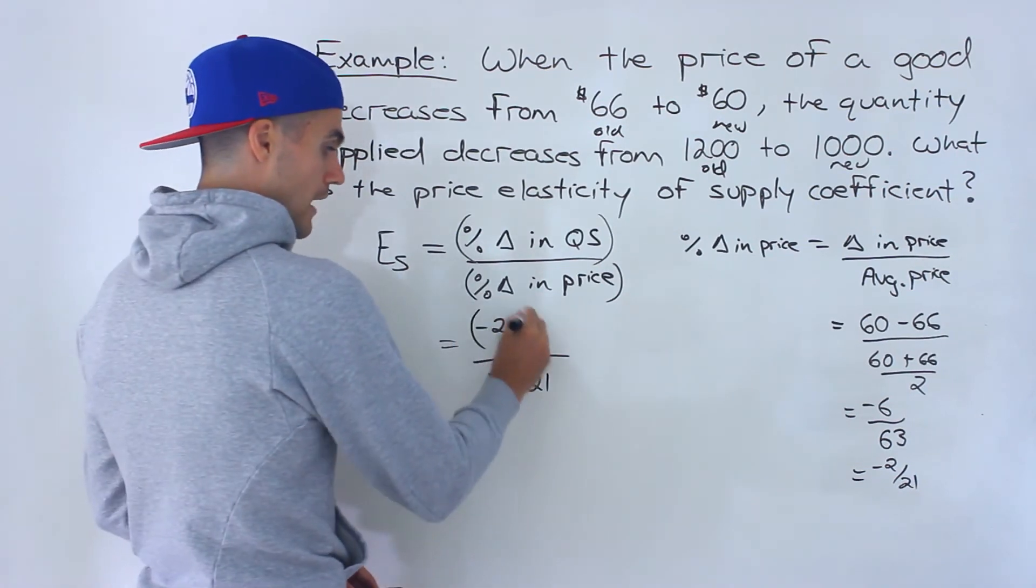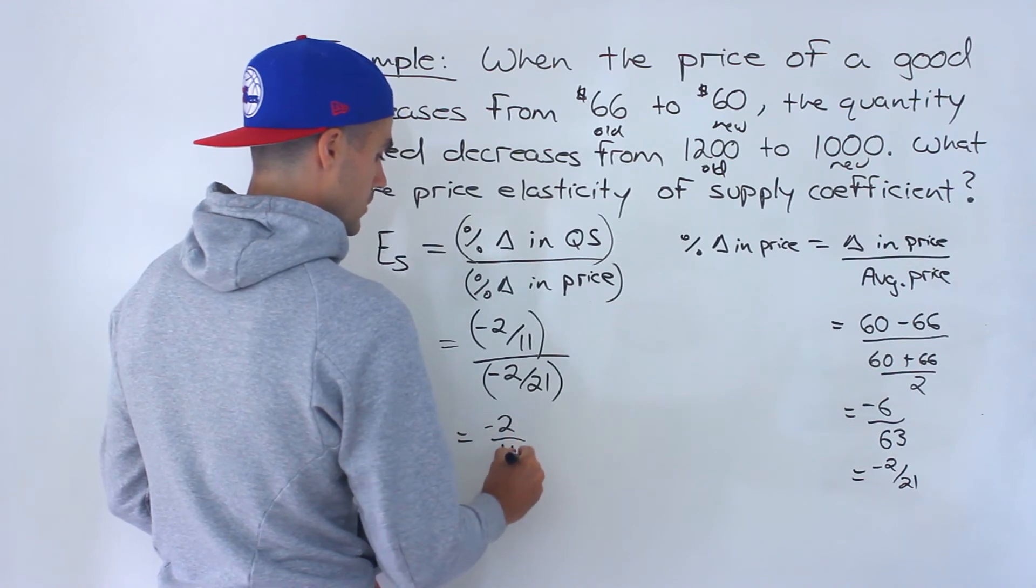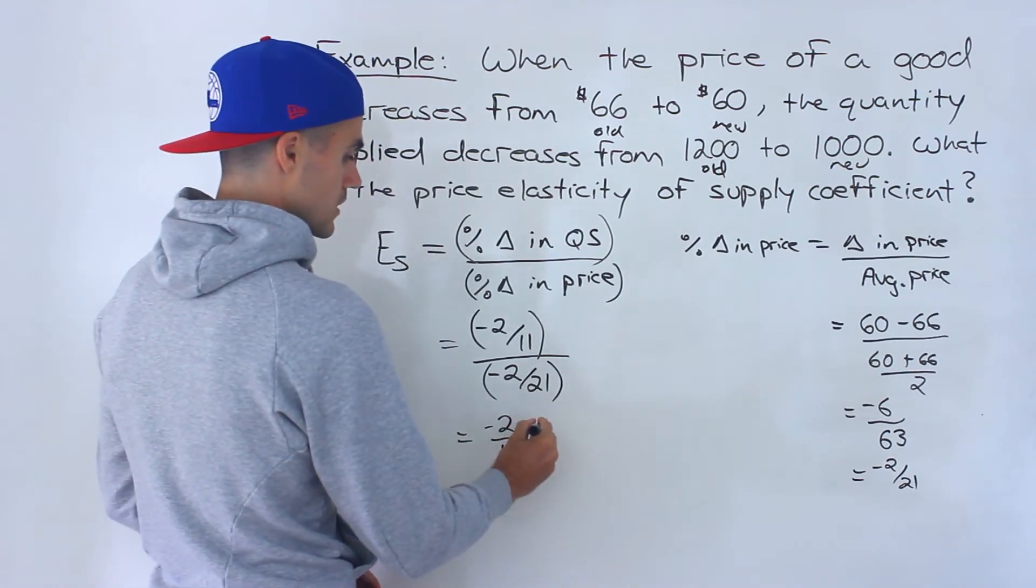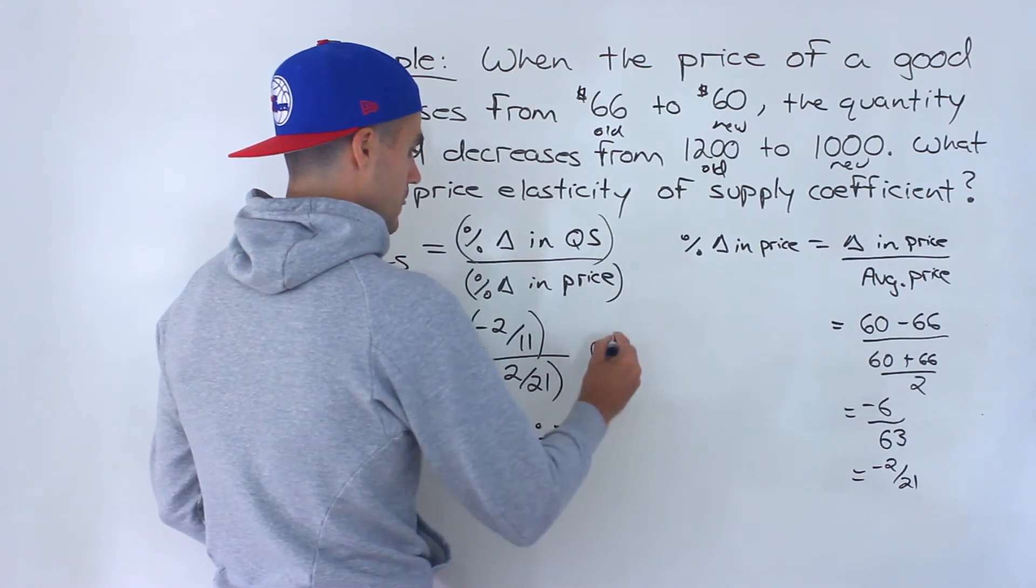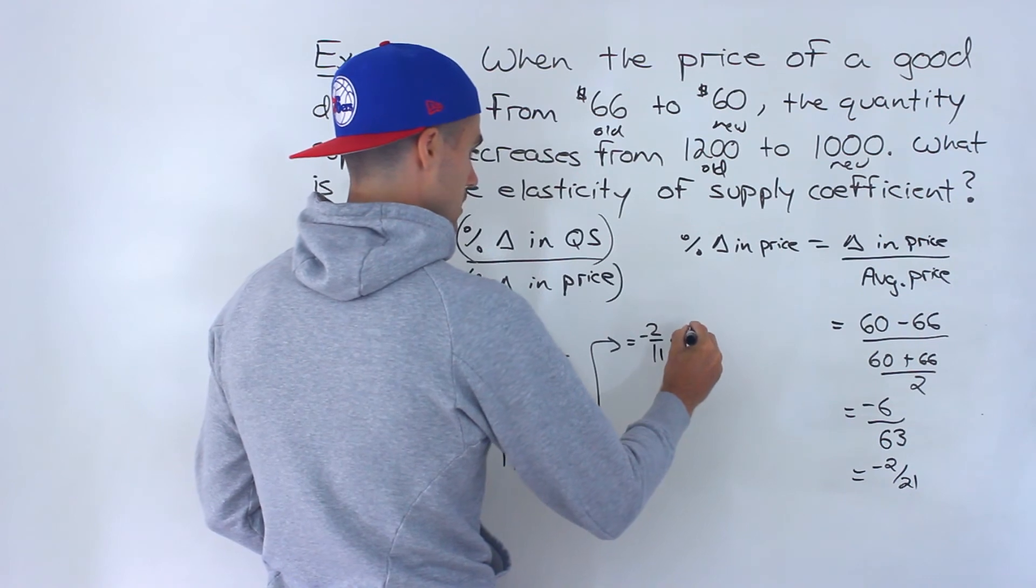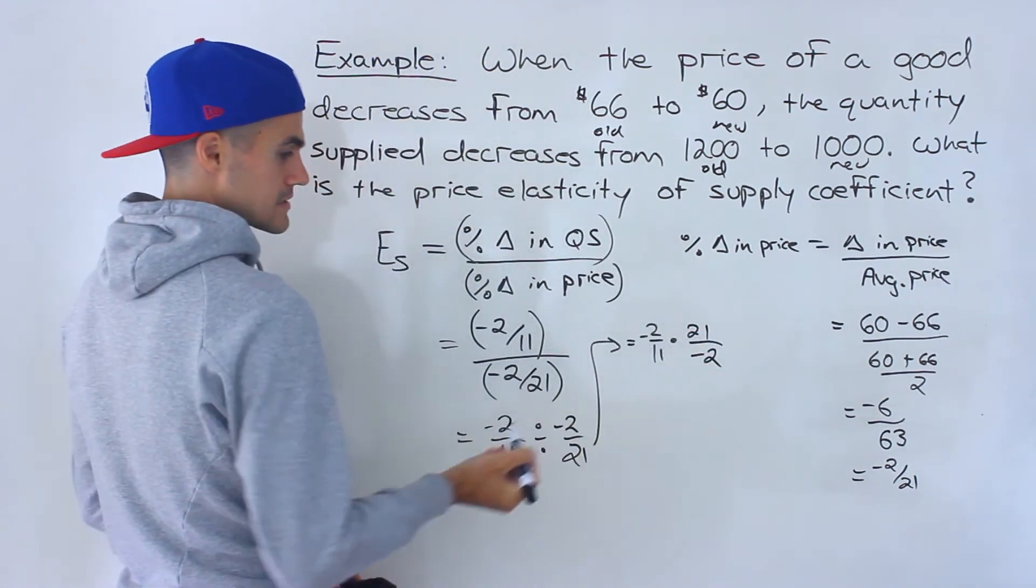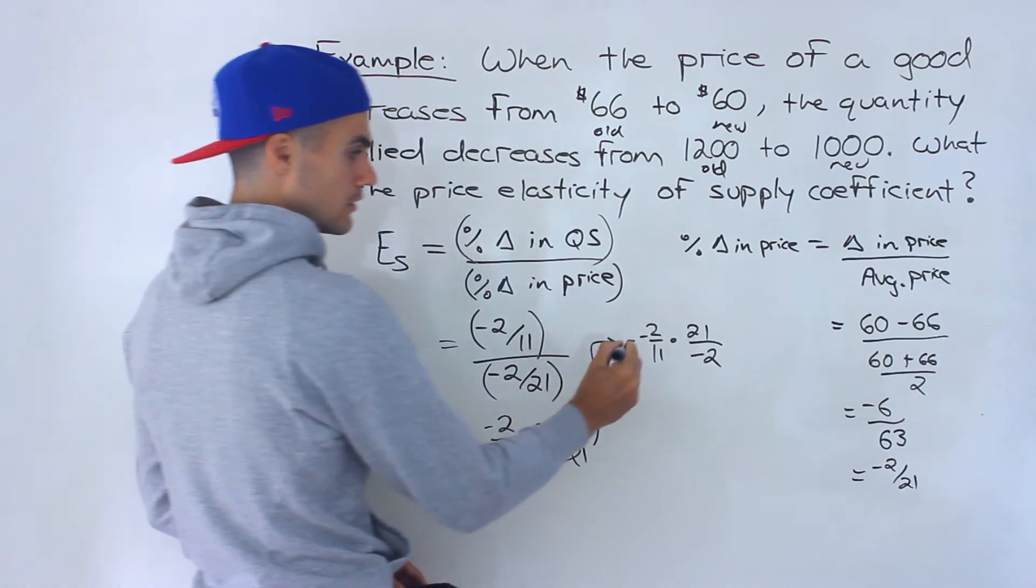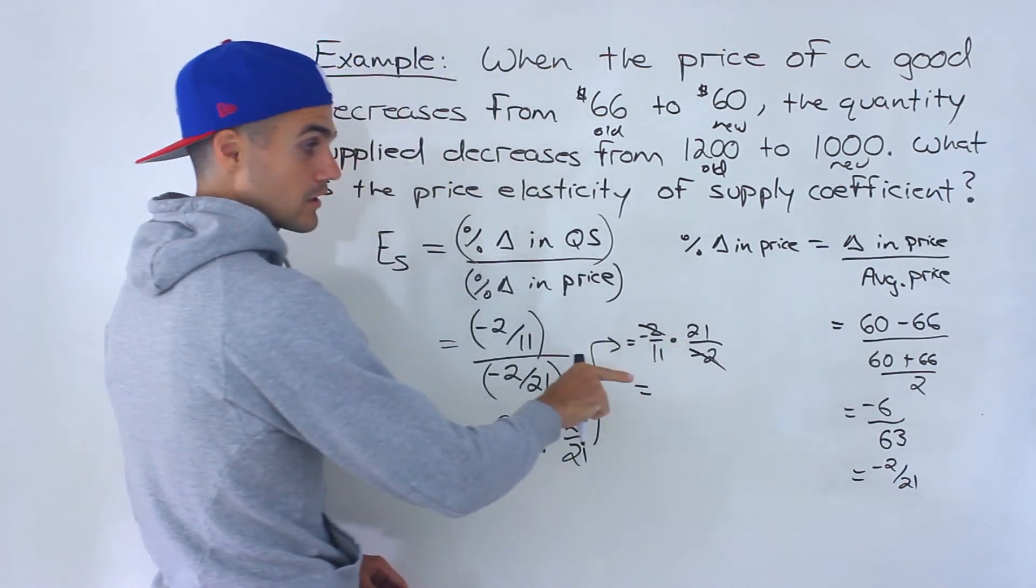All right. So now we got one fraction divided by another. And so it's just simple algebra, negative 2 over 11, let's write it as divided by negative 2 over 21, which is negative 2 over 11 times 21 over negative 2. If we flip that second fraction, now we're going to be multiplying. Notice the negative 2s cancel out, and then notice the negatives cancel out as well.